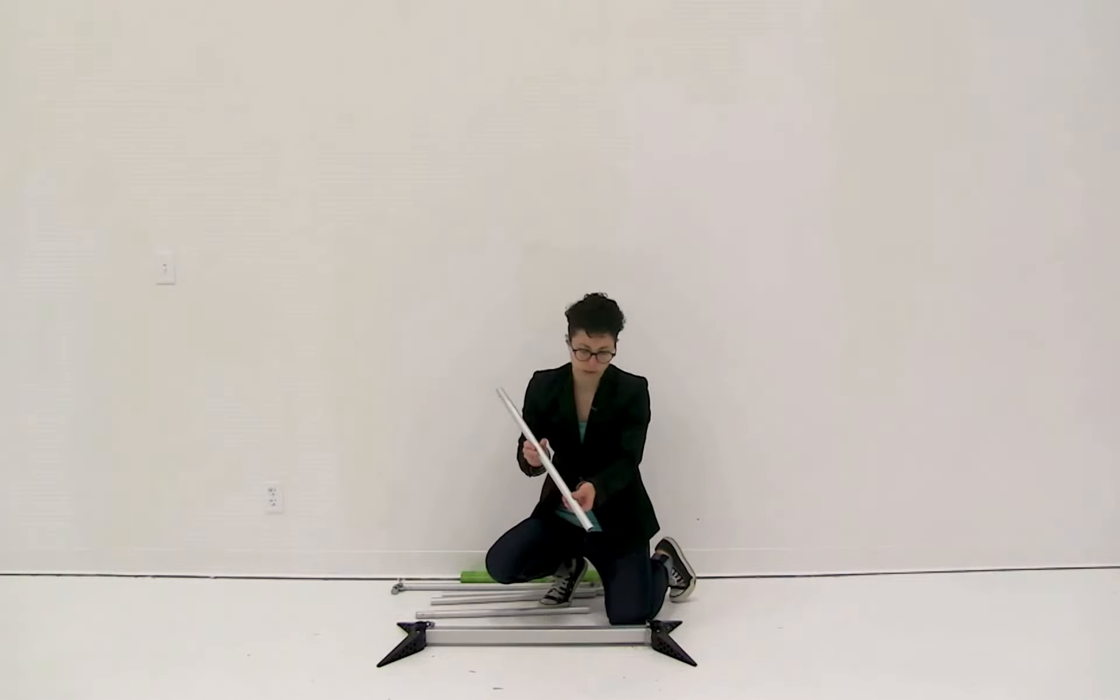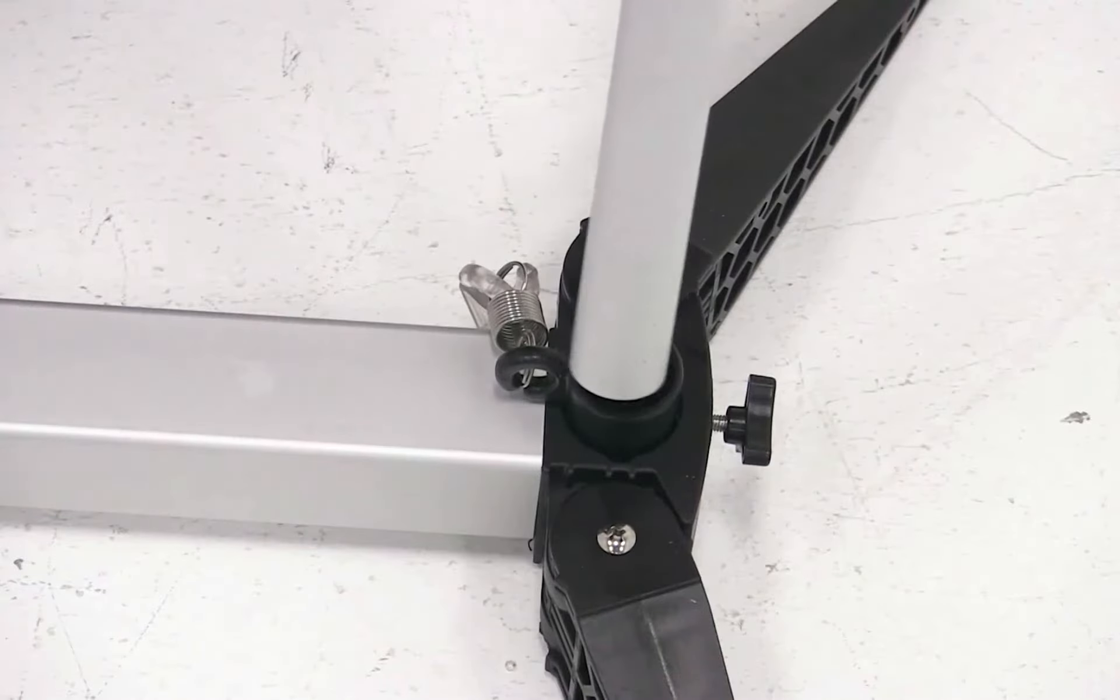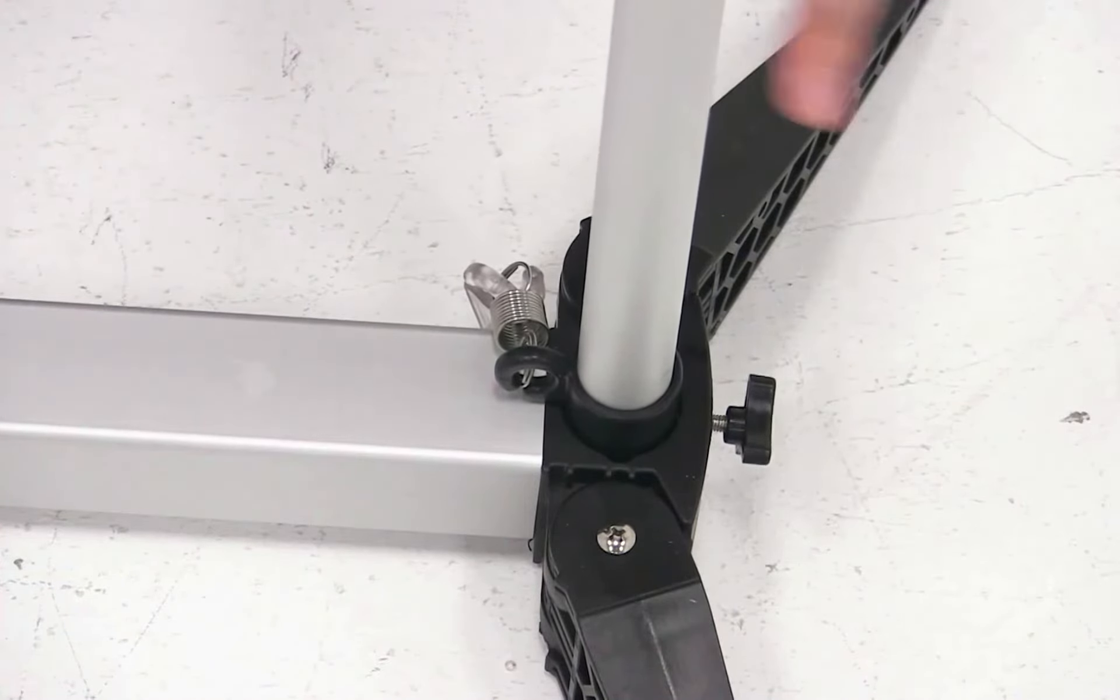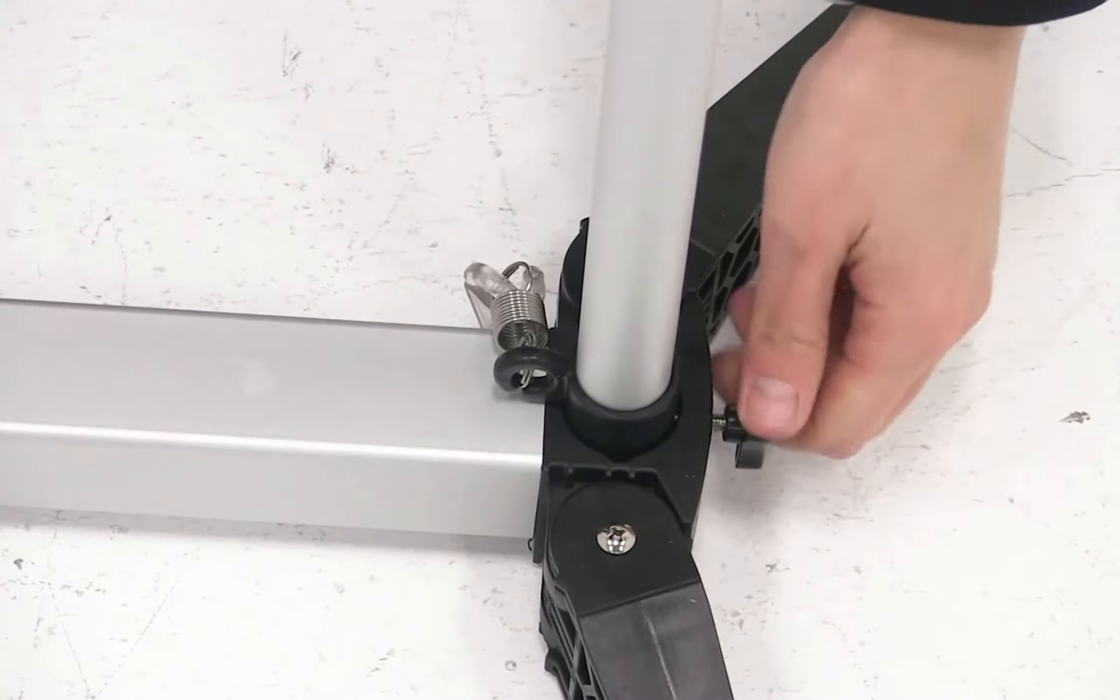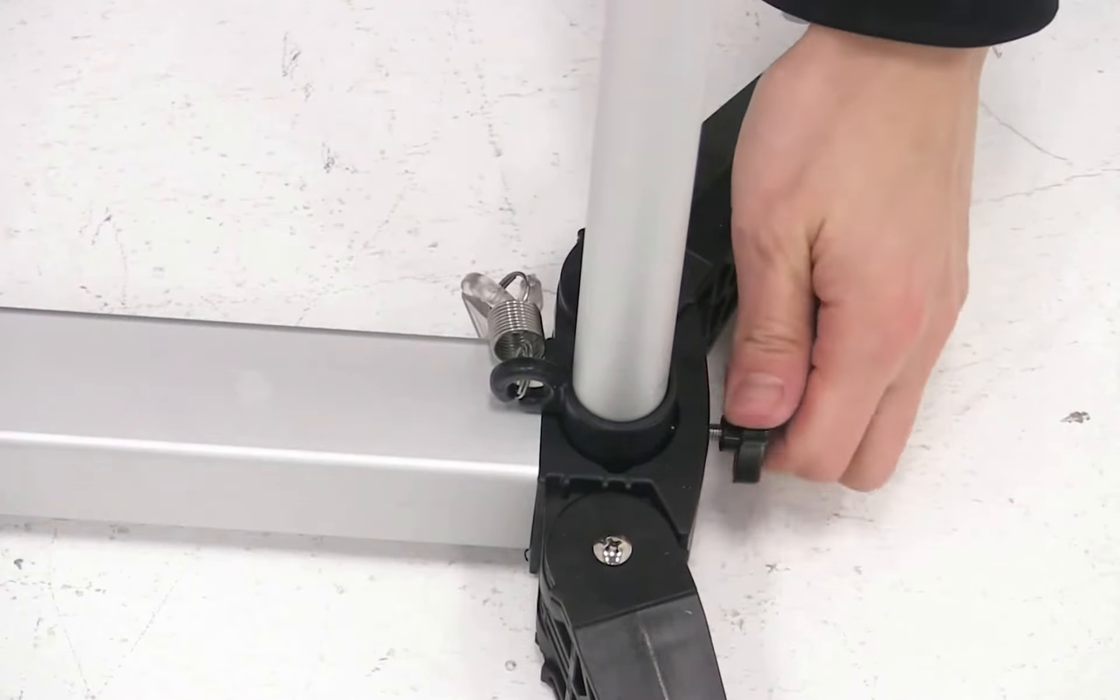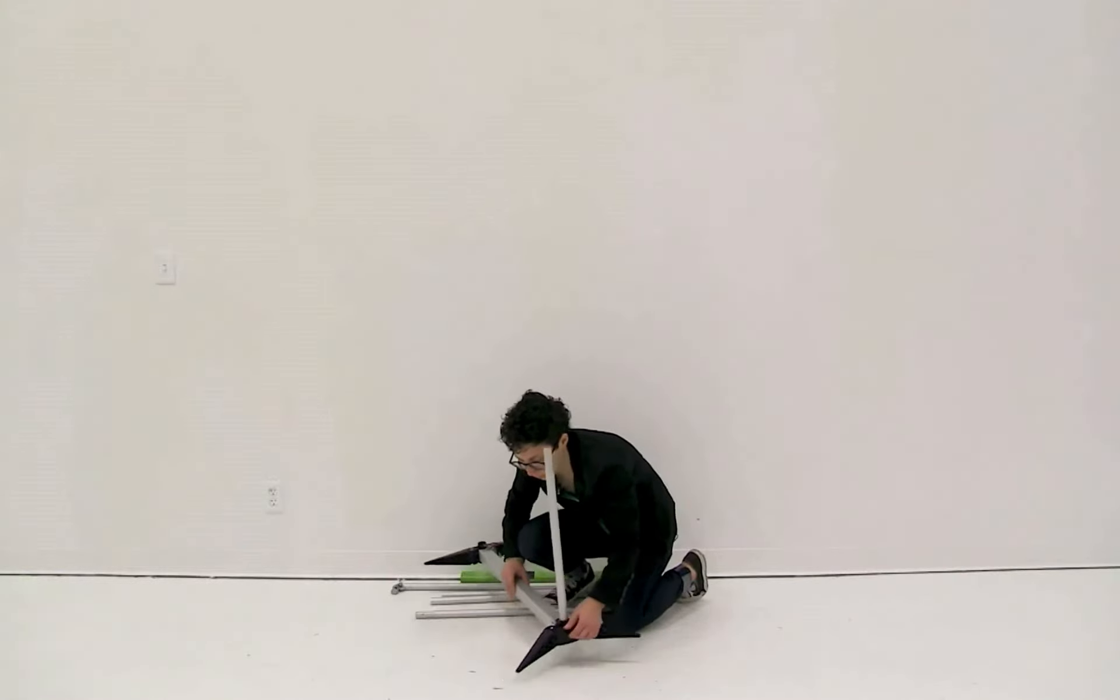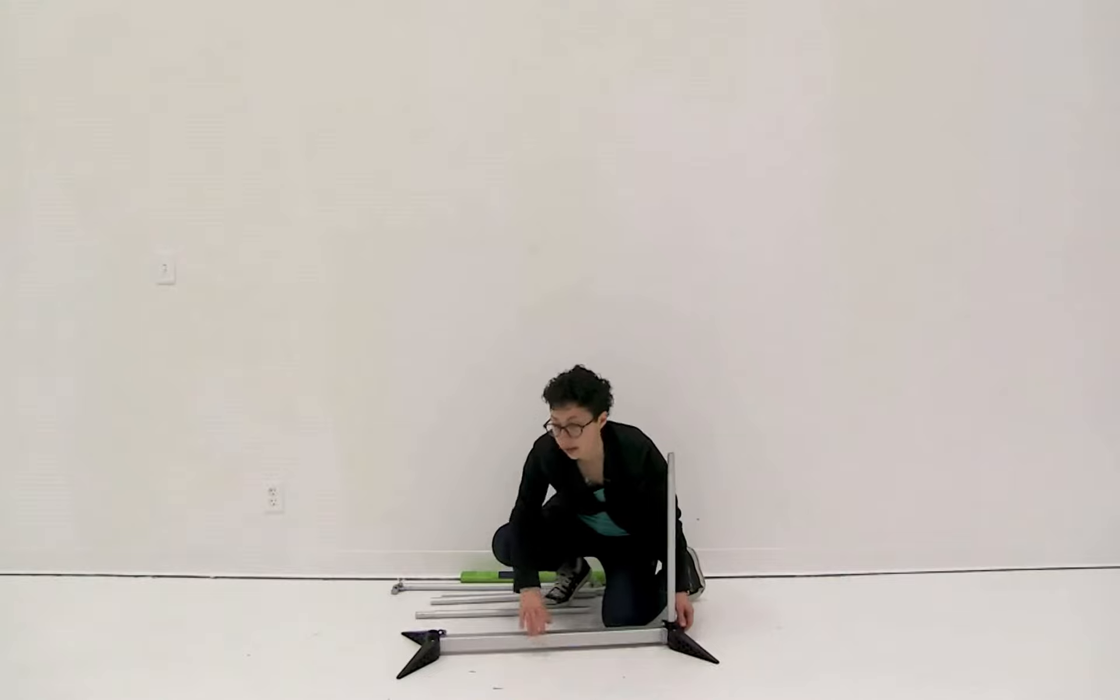It's just a complete pole and we're just going to slide it into one of the sides, and then using the knob on the side we're going to secure it into place. As you're securing the pole into place, you want to make sure that the snap buttons are facing in. We repeat these steps for the other pole.